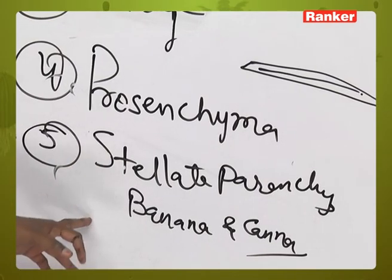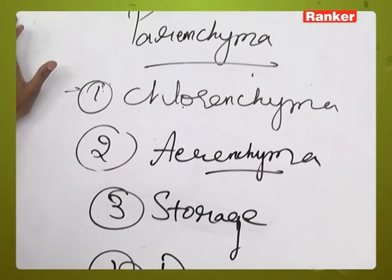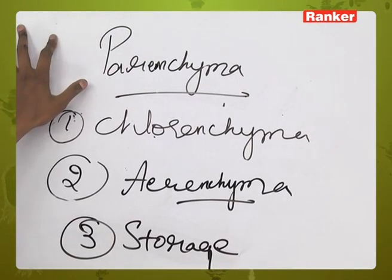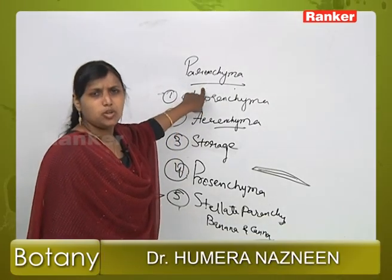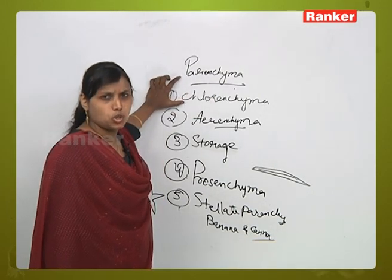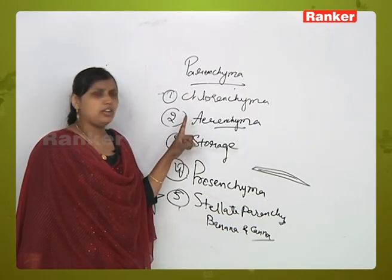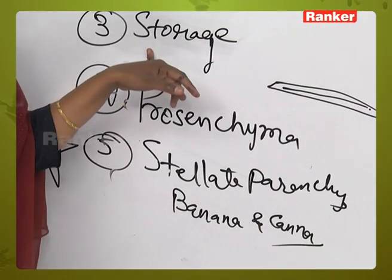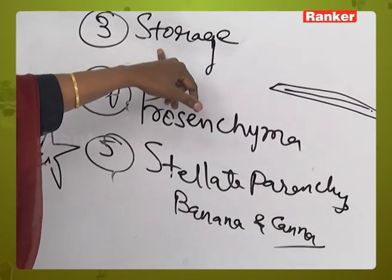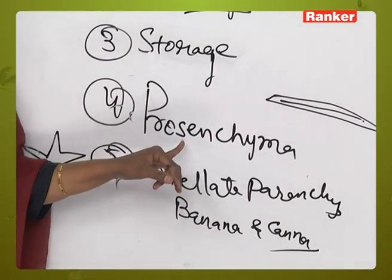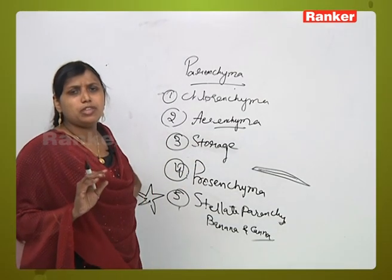That is why the name is given as stellate parenchyma. In summary: parenchyma is the first simple permanent tissue. Chlorenchyma participates in photosynthesis. Aerenchyma helps floating or hydrophytic plants maintain buoyancy. Storage parenchyma stores food material like carbohydrates, proteins, and sugars. Prosenchyma is found in the pericycle. Stellate parenchyma is found in the leaves of banana plants.